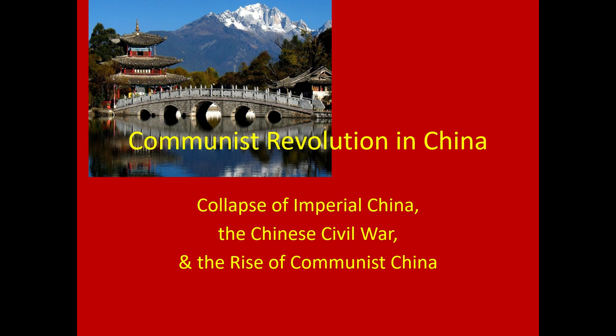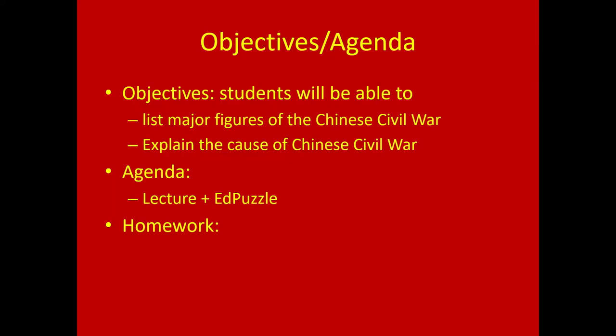Hello class, today we are going to look at the communist revolution in China. This is going to require a little bit of backtracking — we're going to jump back to 1911 and look at what's been going on in China and how communism comes to the fore. We'll look at the collapse of imperial China, the Chinese civil war, and then the rise of communist China, which will set us up for the rule of Mao Zedong.